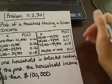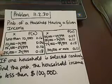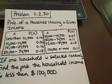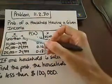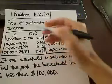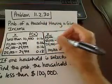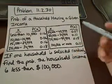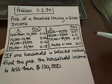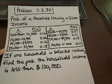This is problem 11.2.30. They give us a chart with the probability of a household having a given income. This column refers to income and this column refers to the probability of falling in that category. The question asks: if one household is selected randomly, find the probability that the household income is less than a hundred thousand.